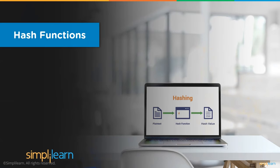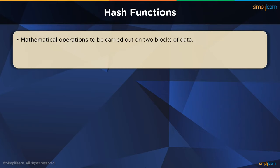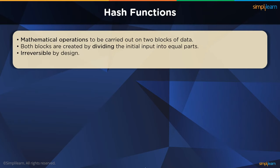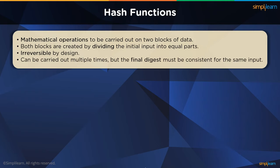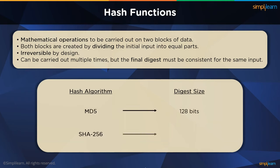Since so much important information is being passed to the hash function, we need to understand how they work. A hash function is a set of mathematical calculations operated on two blocks of data. The main input is broken down into two blocks of similar size, and the block size is dependent on the algorithm being used. Hash functions are designed to be one-way — they shouldn't be reversible, at least by design. Some algorithms like MD5 have been compromised, but more secure algorithms are used today, like the SHA-family algorithms. The digest size is also dependent on the respective algorithm: MD5 has a digest of 128 bits, while SHA-256 has a digest of 256 bits. This digest must always be the same for the same input, irrespective of how many times the calculations are carried out — a crucial feature since comparing hash values is the only way to check if data is untouched.